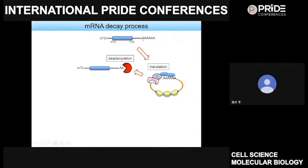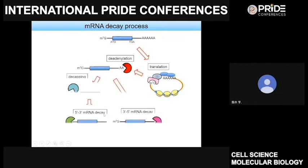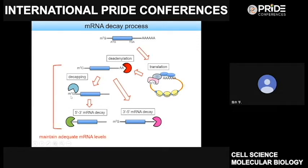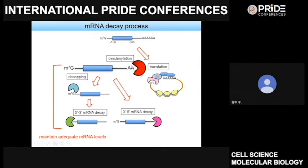In the process of mRNA decay, shortening of the poly-A tail called deadenylation first takes place. Following deadenylation, two different types of exonuclease, namely 5' to 3' exonuclease or 3' to 5' exonuclease, function to completely degrade mRNA. Deadenylation is a rate-limiting step that largely determines the fate of mRNA. We have been studying the biological function of the CCR4-NOT complex, which largely contributes to deadenylation steps in almost all organisms.